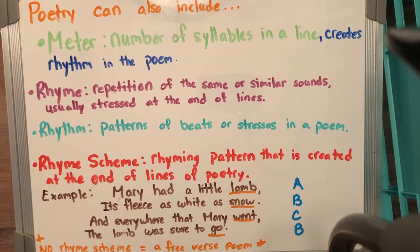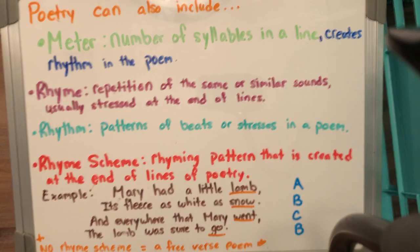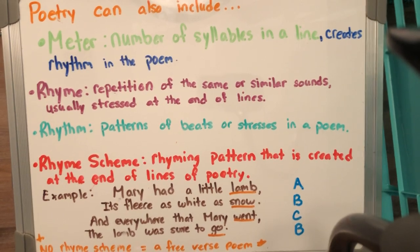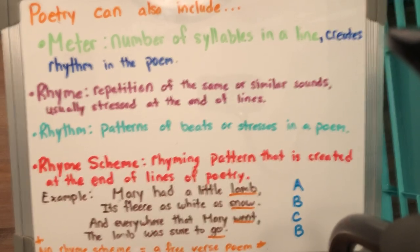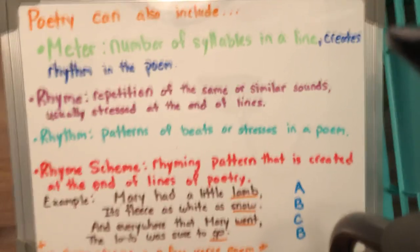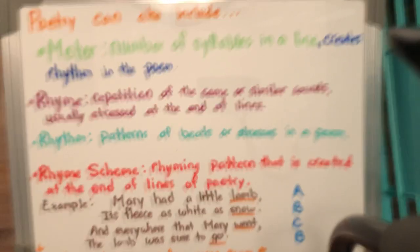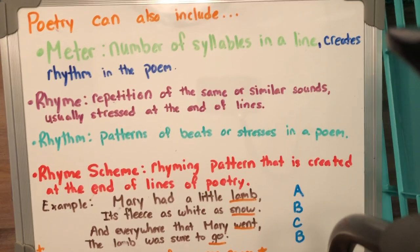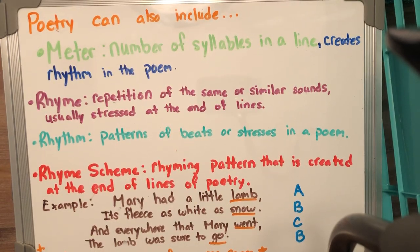Then we have rhythm, which is the pattern of beats or stresses in the poem. Everything seems like it's following this type of movement — it kind of is. So it could follow those little bumps, this little tapping — that's kind of like the beats. When you read the poem to yourself, when you say it out loud, you kind of get some rhythm and beat patterns going on.